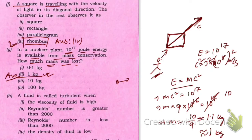A fluid is called turbulent when the Reynolds number is greater than 2000. That is the correct option. Hope you understood this.